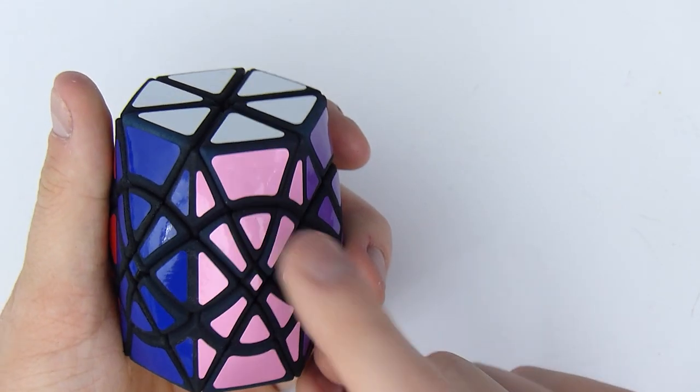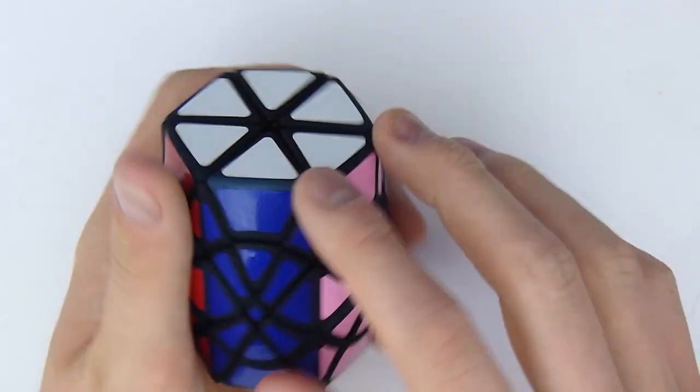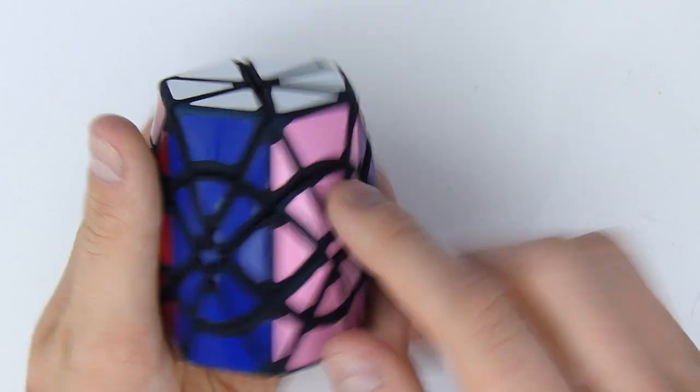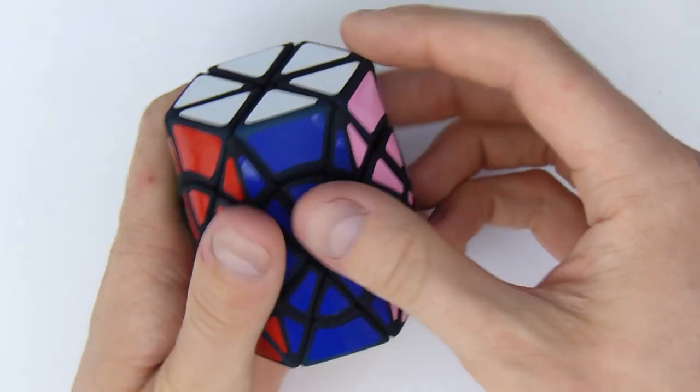So basically there's a corner turning hexagonal prism, and on top of it there's this puzzle. Now this is the equivalent of a corner turning, deeper cut hexagonal prism, but I fissured it so that it looks edge turning like that.